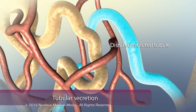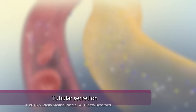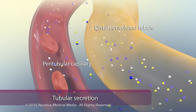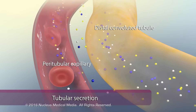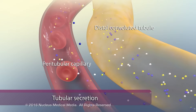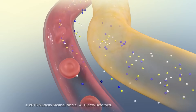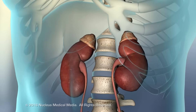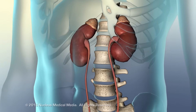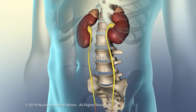The final step of urine production is tubular secretion, which occurs primarily in the distal convoluted tubules. These tubules extract larger nitrogenous wastes, excess hydrogen ions, and excess potassium ions from the peritubular capillaries, and secrete them into the tubular fluid. From here, these wastes will continue through the urinary system until they pass out of the body in urine.